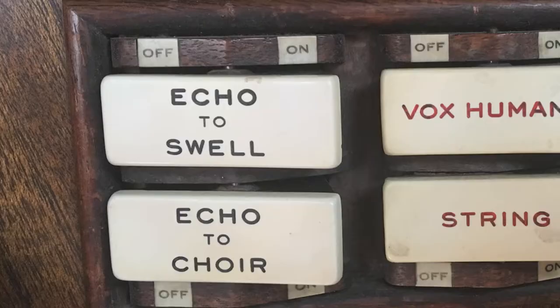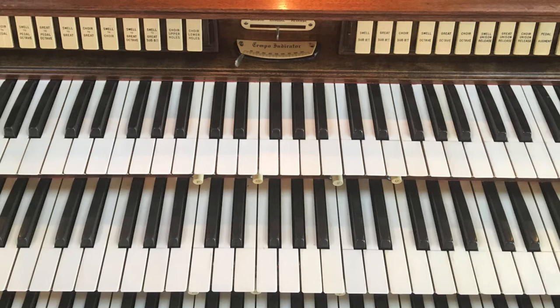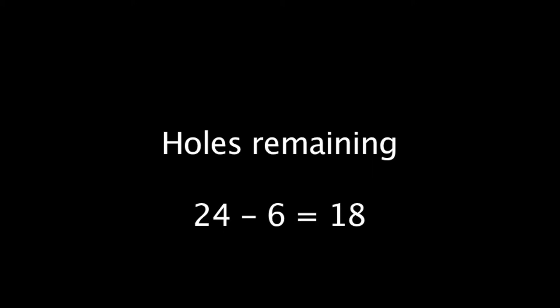Accessories such as echo, harp, and chimes can be coupled to either keyboard. That then takes two holes for each accessory. Six holes are required and each hole has its toggle switch.